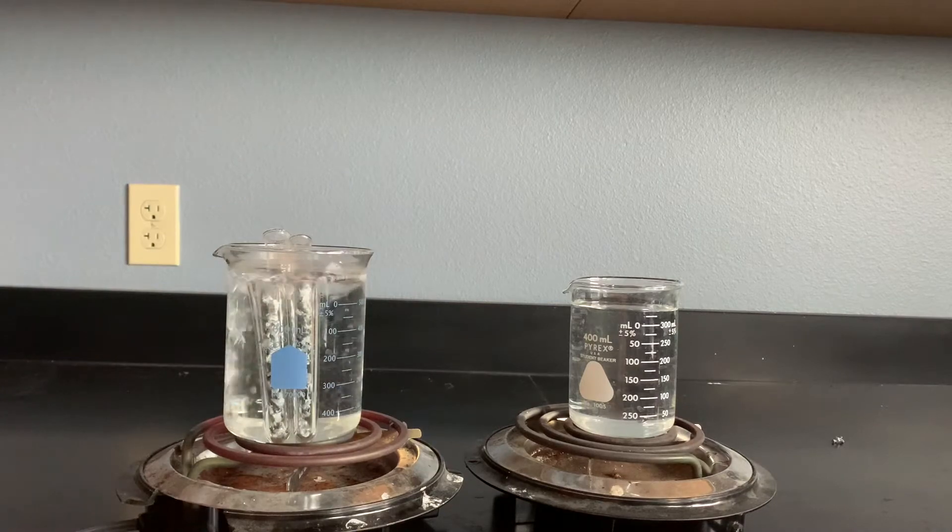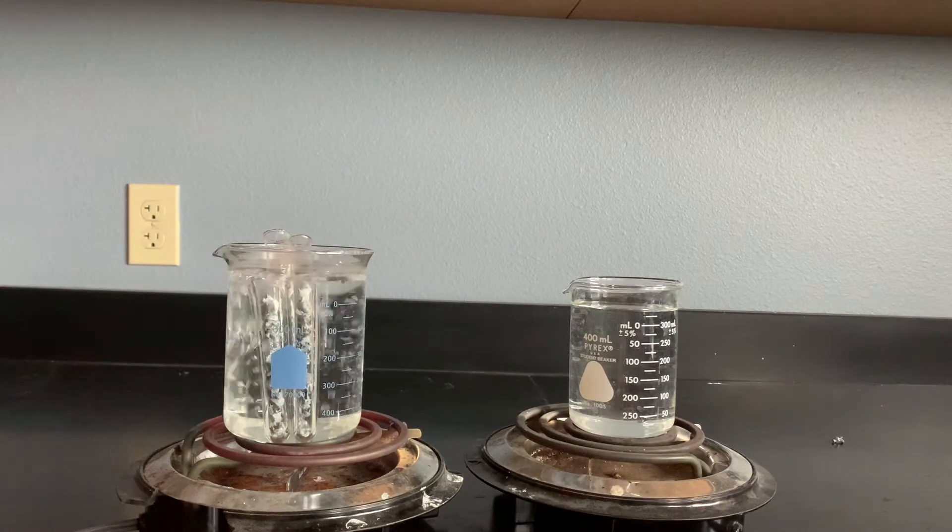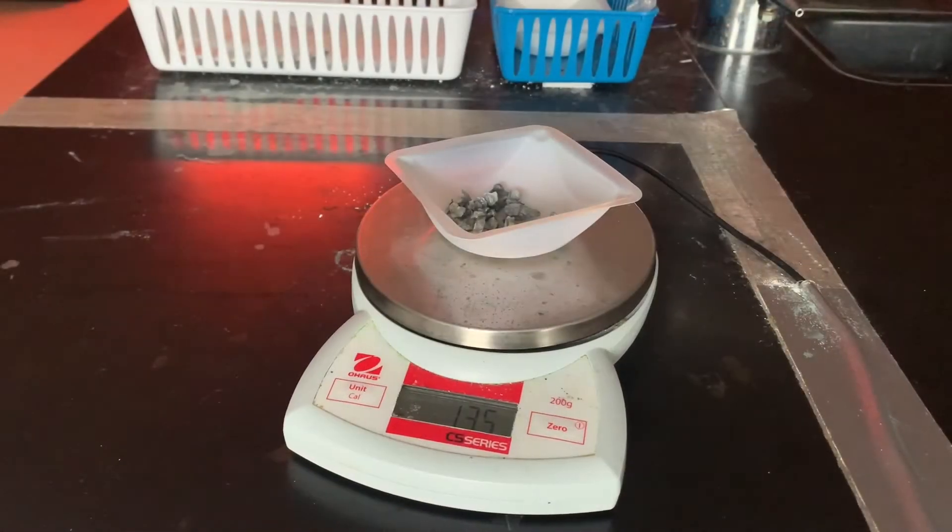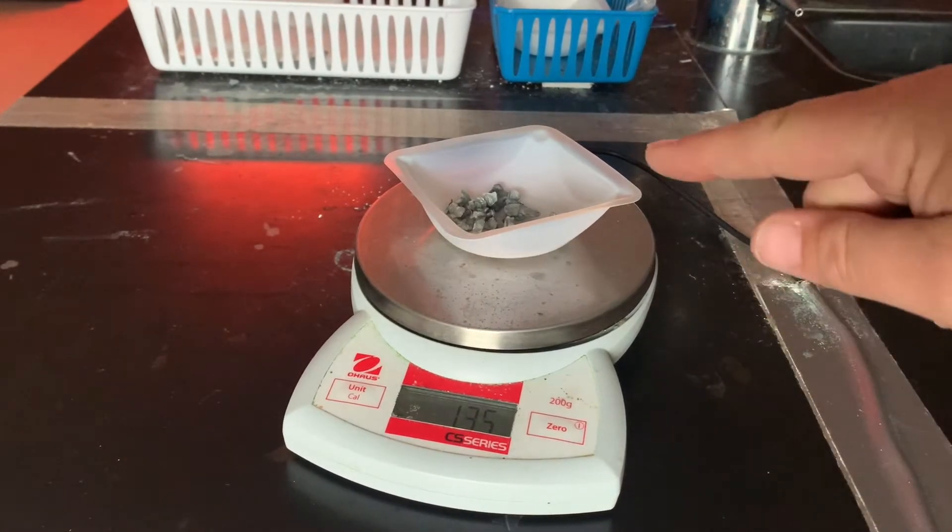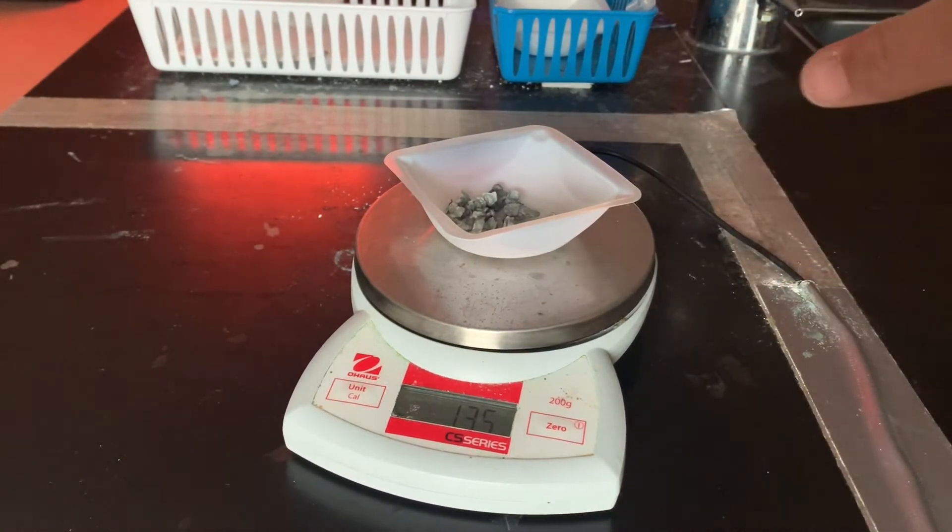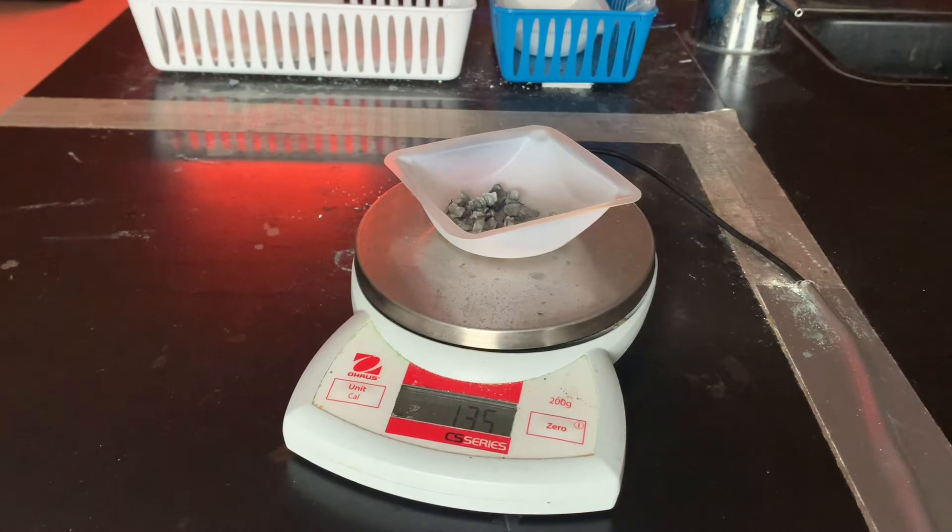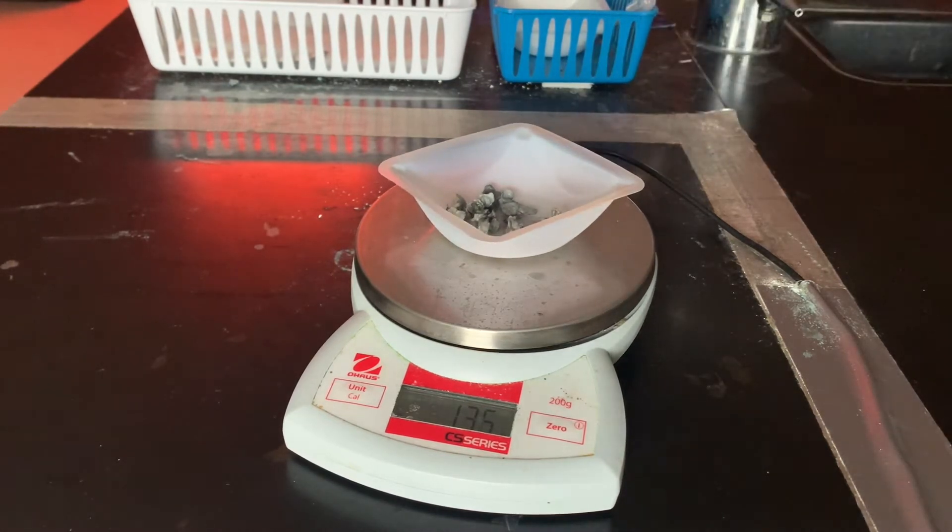We're going to get the water to boiling and then we need to get our zinc. We're going to measure out our zinc, and I already pre-measured and tarred out the weighing boat, and we're simply going to put it inside a test tube.